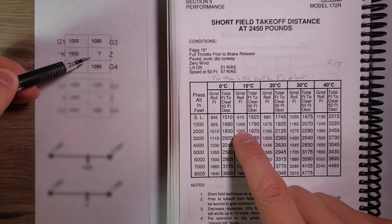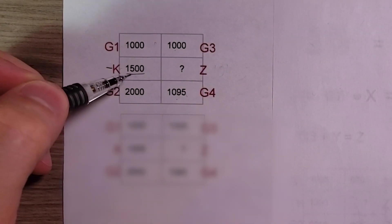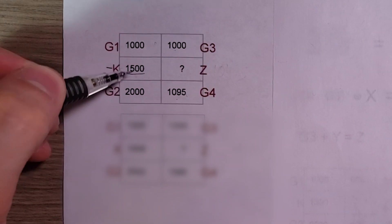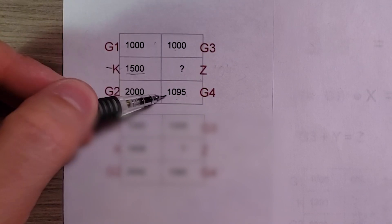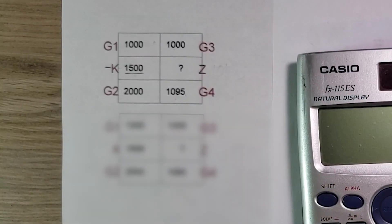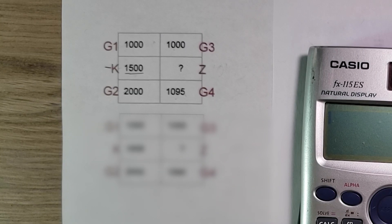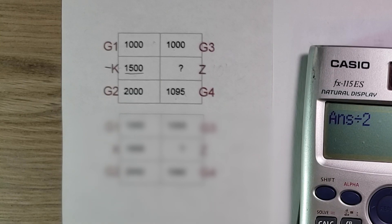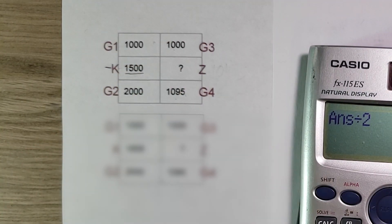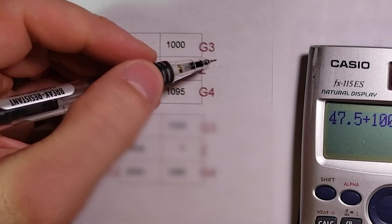We need to know what the ground roll is at 1,500 feet. We know that 1,500 is halfway in between 1,000 and 2,000, so all we need to do is figure out what is halfway in between 1,000 and 1,095. The easiest way is to subtract one from the other: 1,095 minus 1,000 equals 95. Divide that by two — half of 95 is 47.5 — and add that back onto 1,000. So 47.5 plus 1,000 equals 1,047.5.